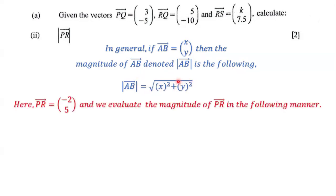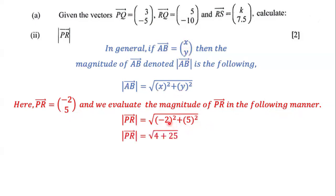In this case, PR is equal to (-2, 5), which we just found. The magnitude of PR is equal to the square root of (-2) squared plus 5 squared. Negative 2 squared is 4, because negative 2 times negative 2 is positive 4. And 5 squared is 25. So the magnitude of PR equals the square root of 4 plus 25, and 4 plus 25 is 29.